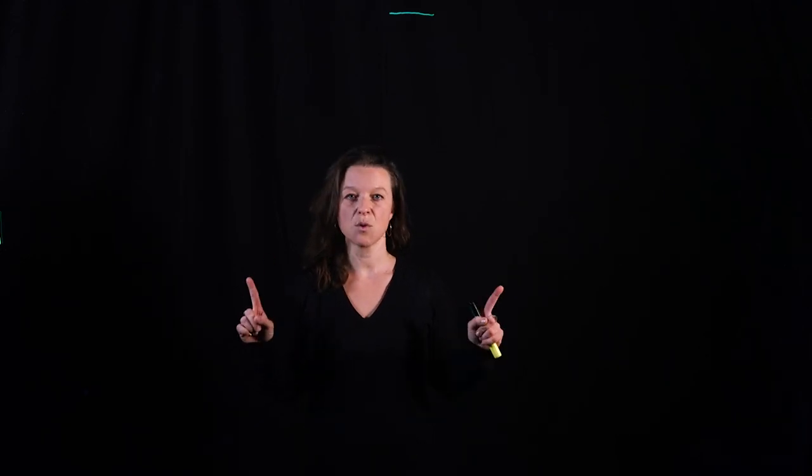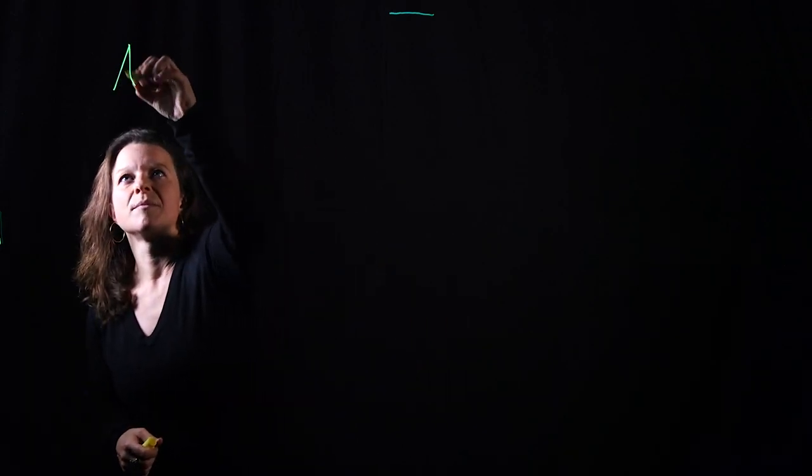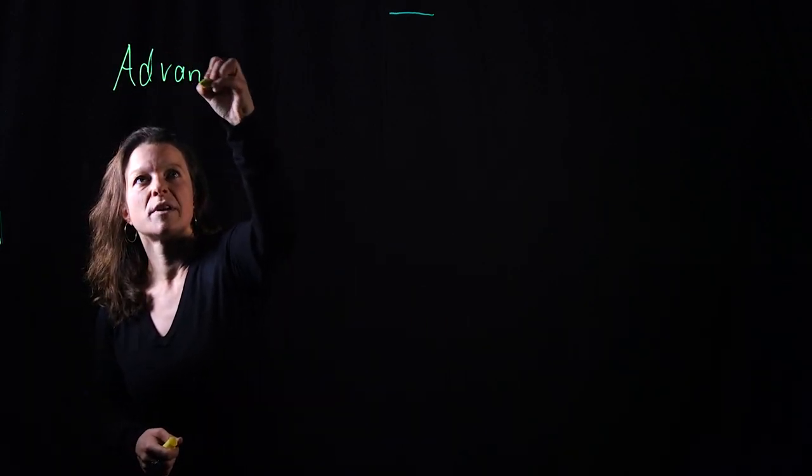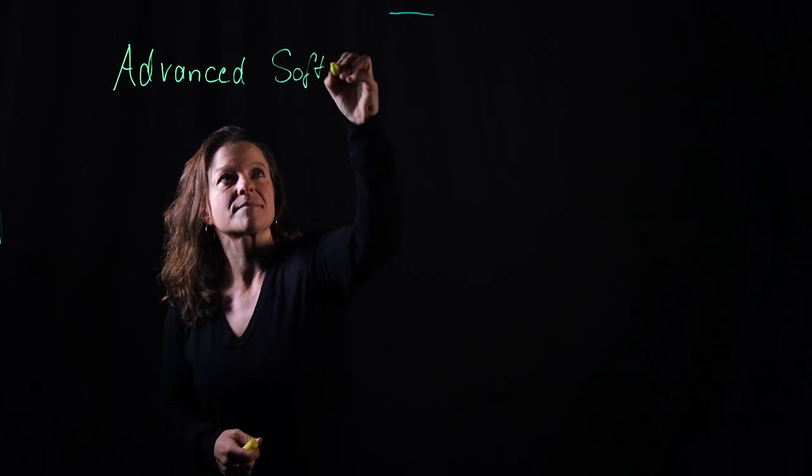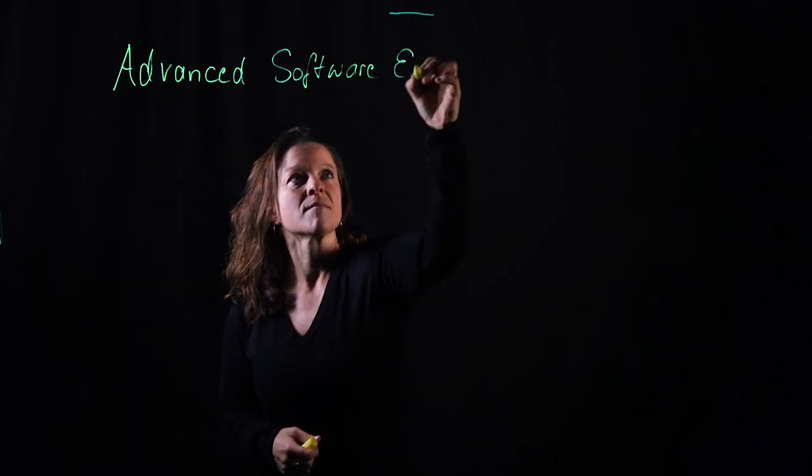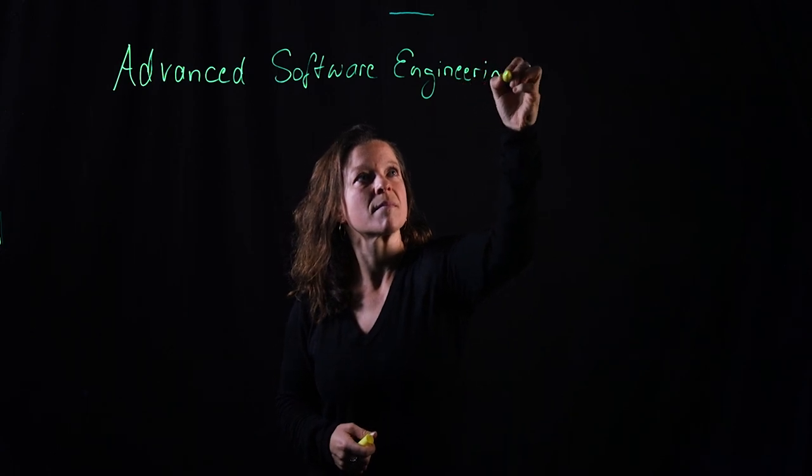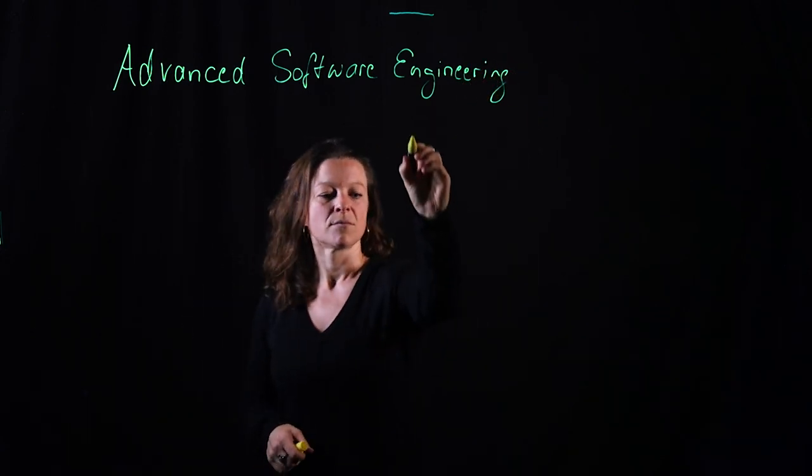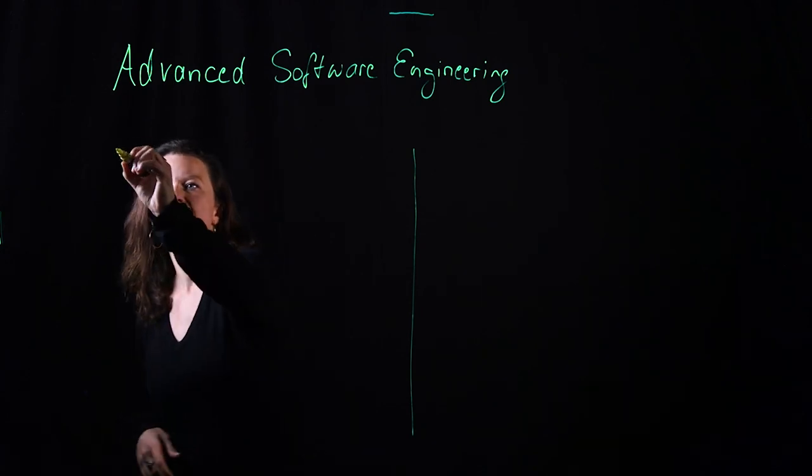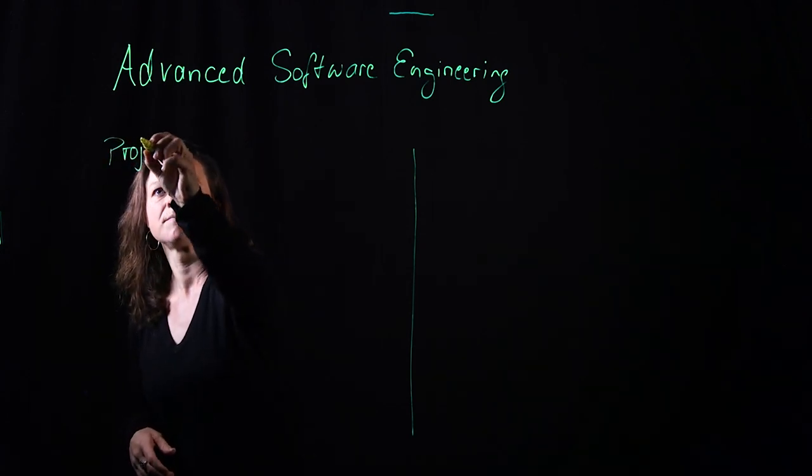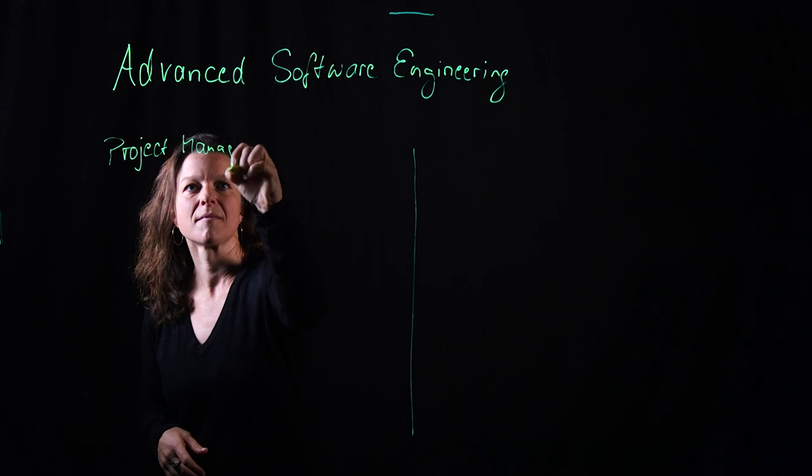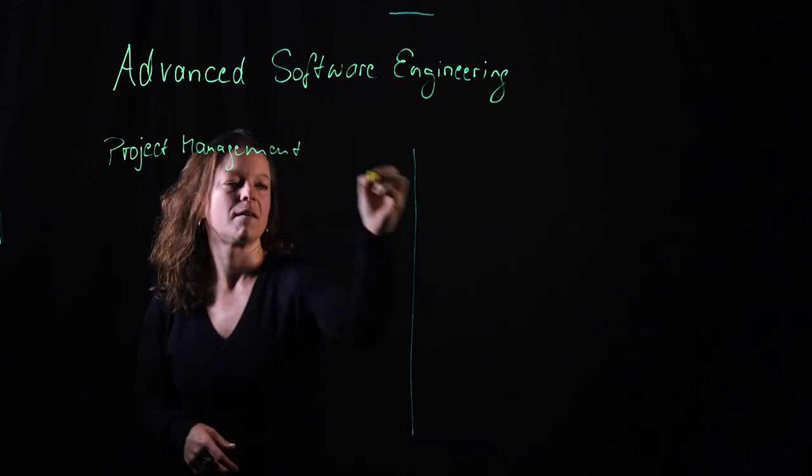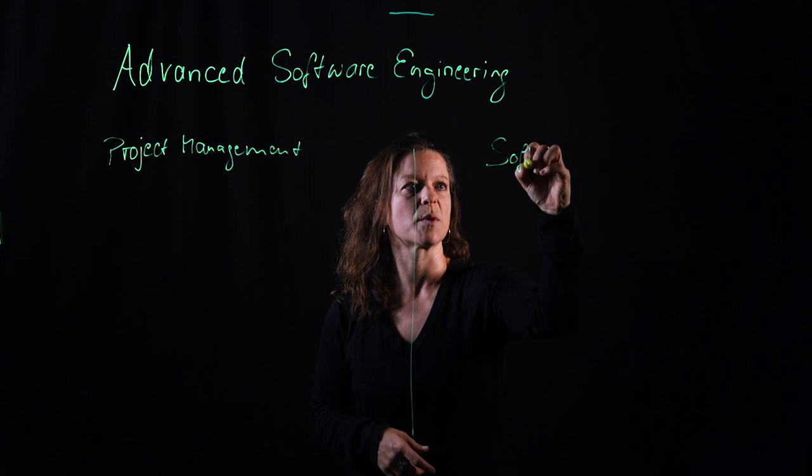We have mainly two areas that we're going to talk about. One of them is project management and the other one is specific software qualities. Let me just start with writing that title up here. So we're just going to split this in two. We're going to start with the project management and save the second half for the software qualities.